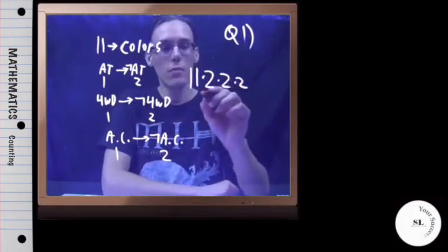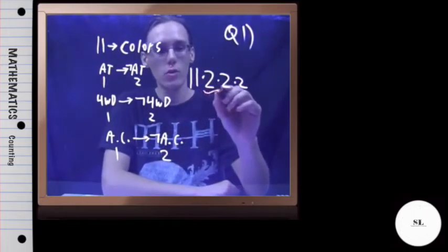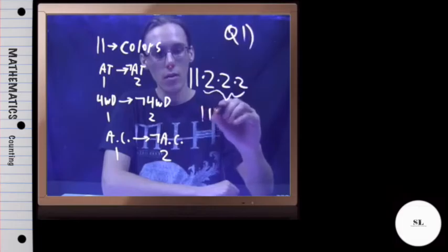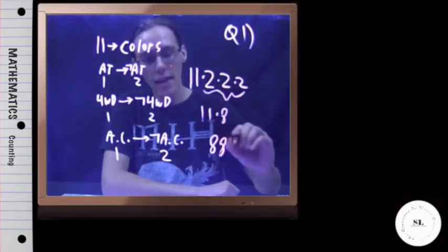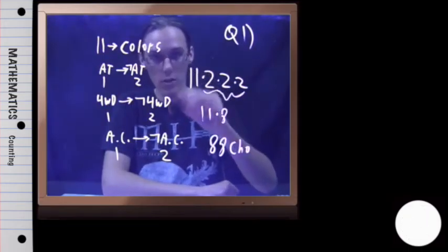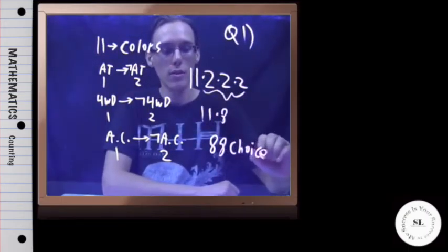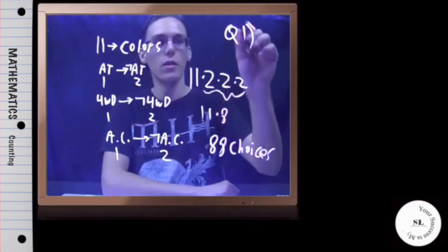If you do this, it'd probably be easier to do the twos first. Two times two times two, well that's eight, and 11 times eight is 88. There are 88 possible car combinations you could get just looking at those options. And that is question number one.